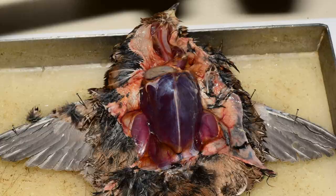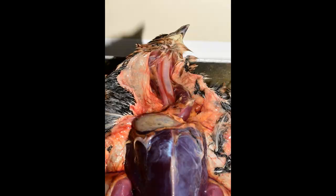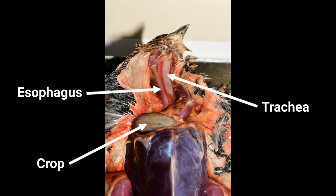In most birds, the oesophagus expands to form a crop, which serves as a reservoir for the ingested food, and in some birds can produce a nutrient-rich secretion, called crop milk, during the breeding season.